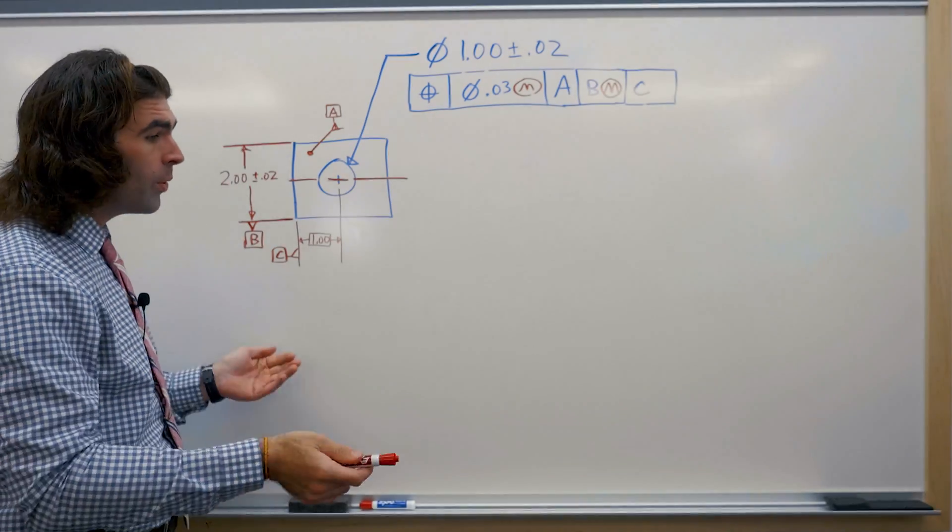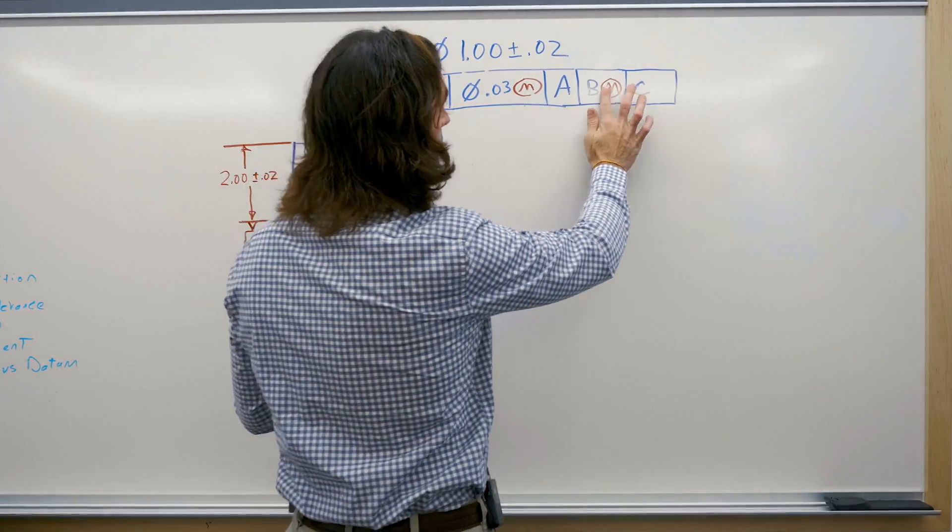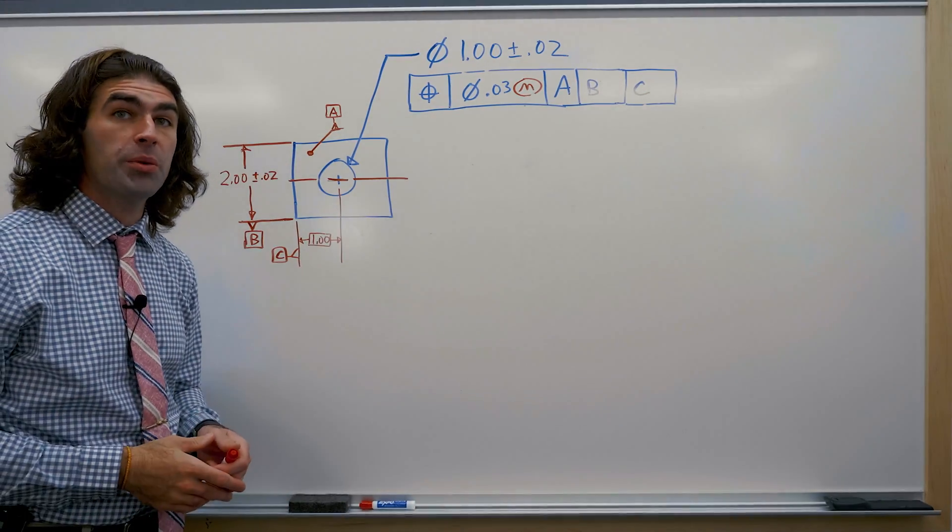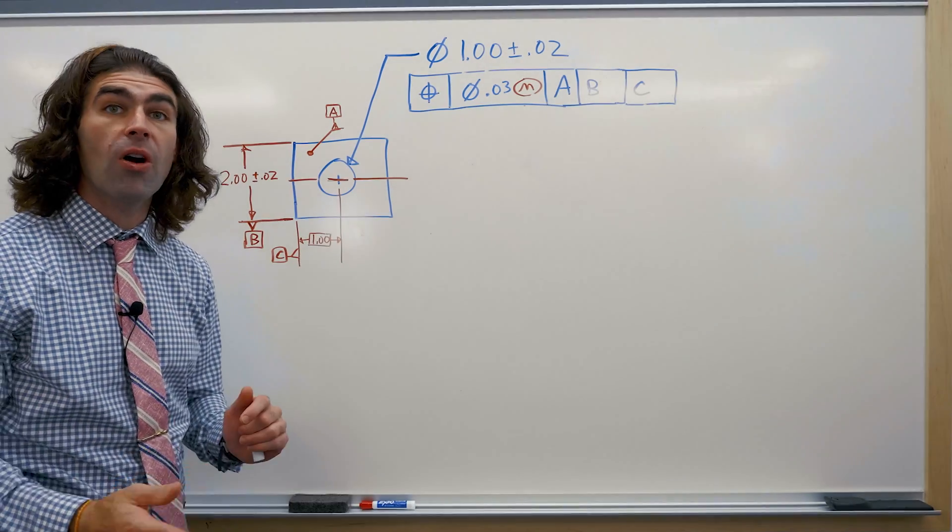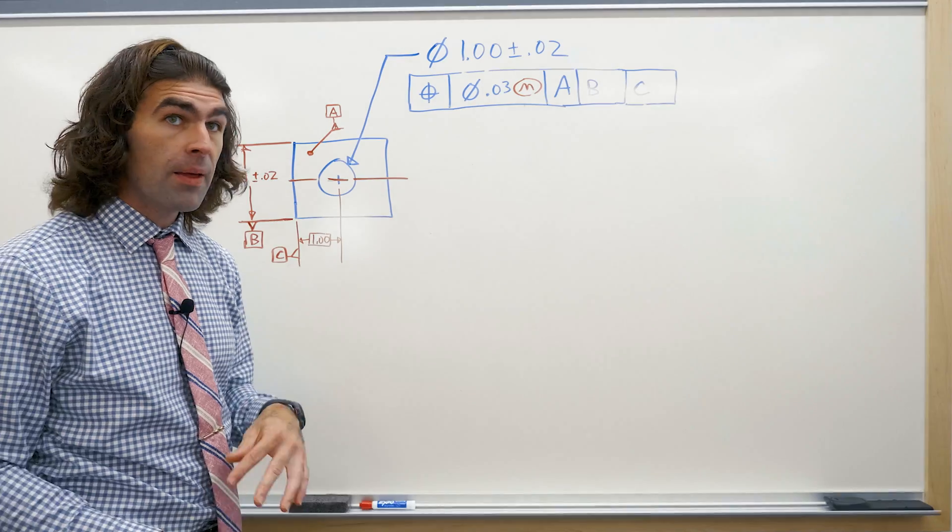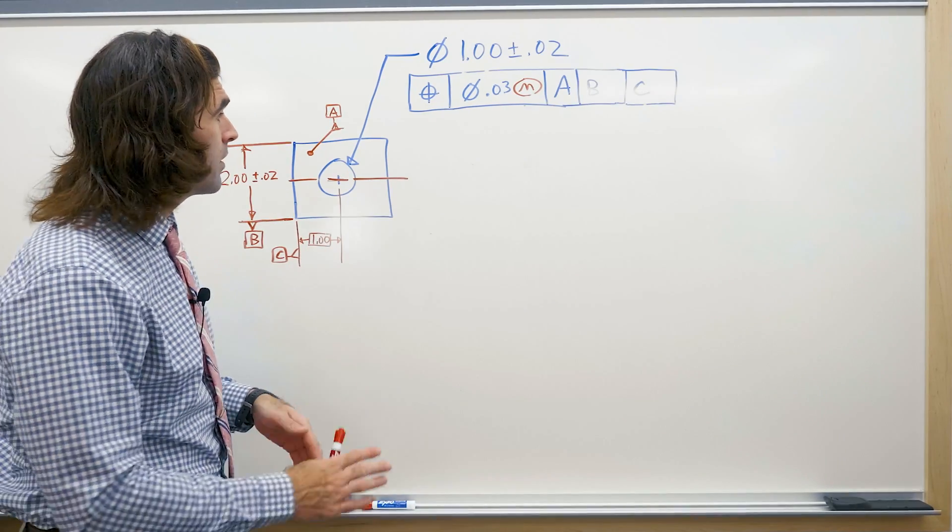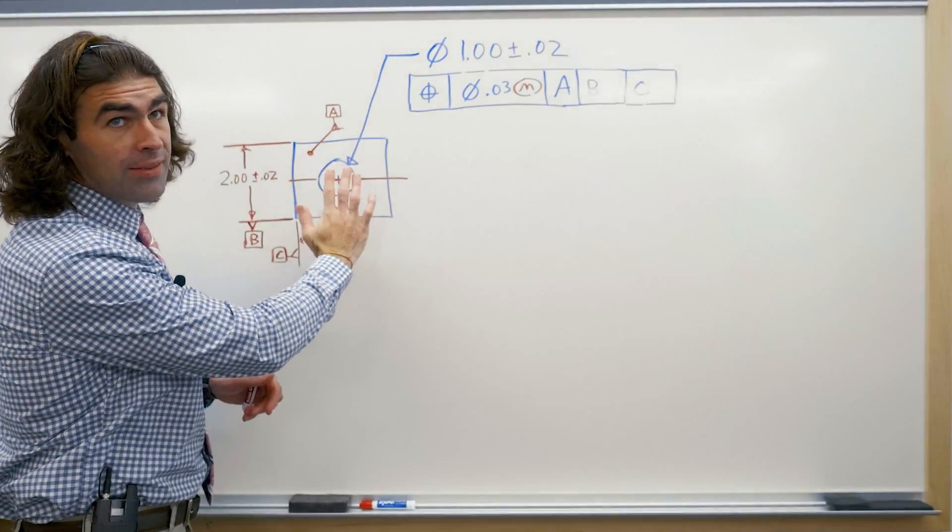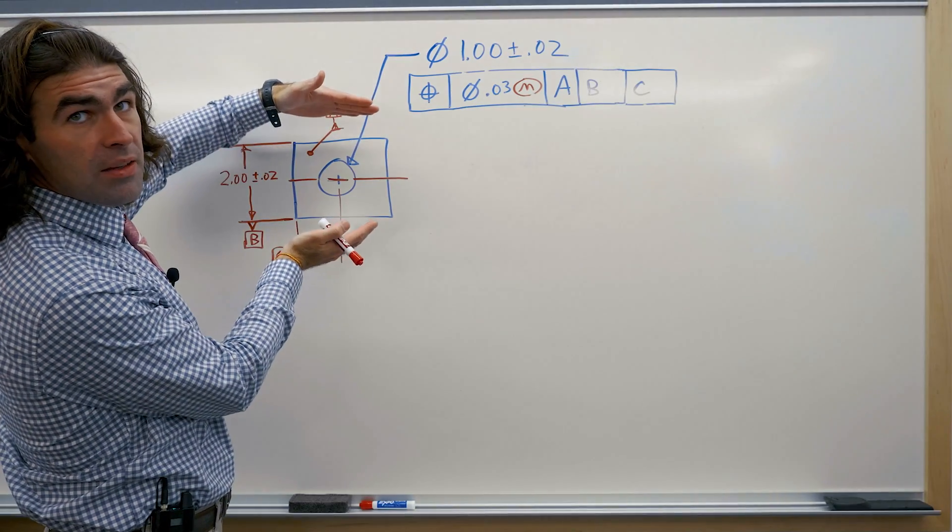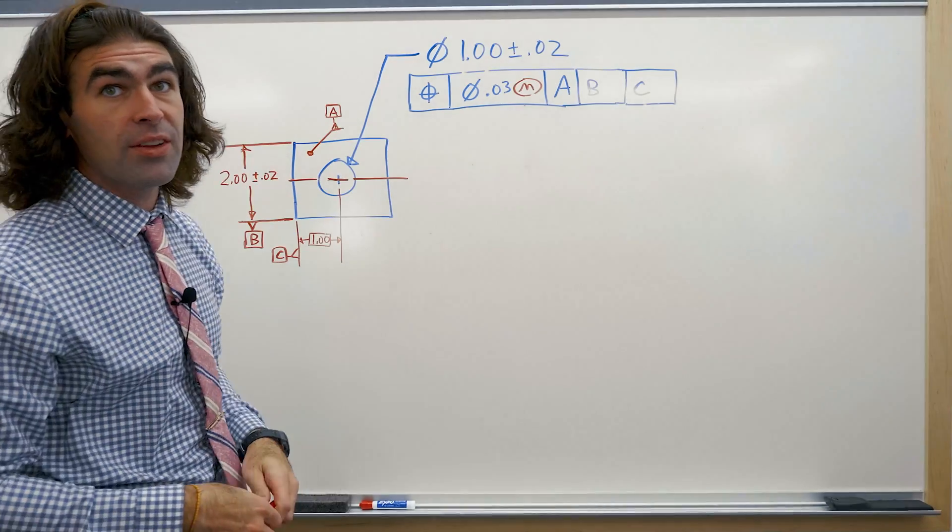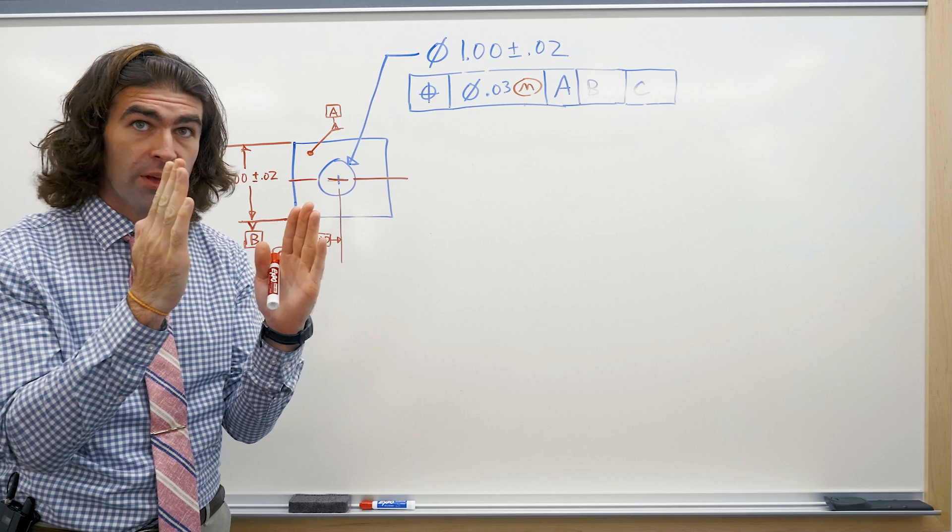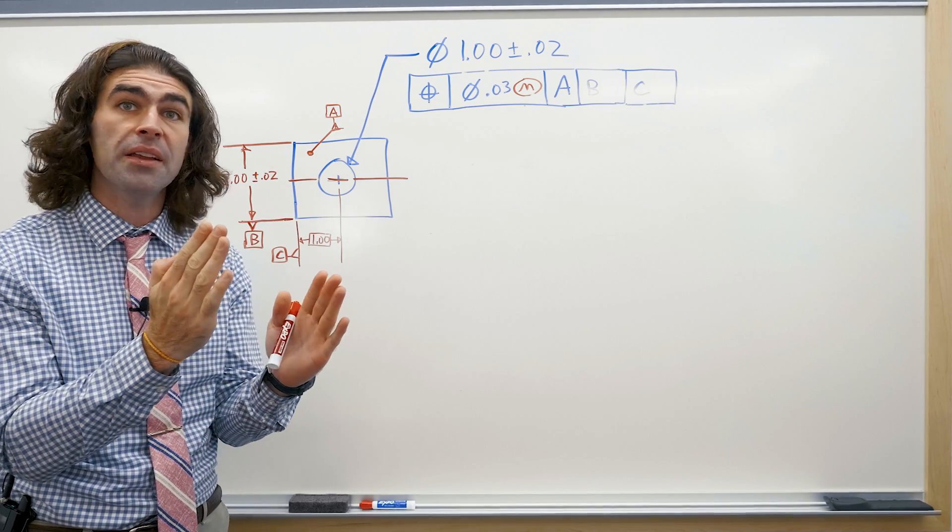So if there is no symbol here, it still has a material condition modifier. It's just considered RFS or regardless of feature size. What it's saying when you inspect this part you should put it flat against A, get three points. You should have something collapse on B to establish that center plane. Now in theory it's some kind of perfectly parallel jaws coming together to make maximum contact.